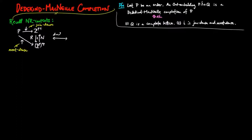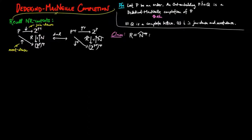By duality, the opposite of the down-segment functor is an NR context as well, and induces a nerve-realization adjunction R-hat left adjoint to N-hat. By duality of adjunctions, we have R-hat is the opposite of N, and N-hat is the opposite of R.